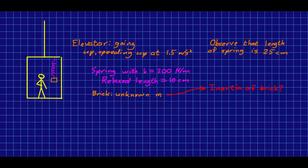So here's our woman in the elevator from a few lectures ago, but now there's a spring hanging from the ceiling with a brick on it. The elevator is going up, and it's speeding up at 1.5 meters per second squared. The spring has a stiffness of 200 newtons per meter and is 10 centimeters long when it's relaxed. And we observe that at the moment it's 25 centimeters long. We don't know the inertia of the brick. Let's find it.